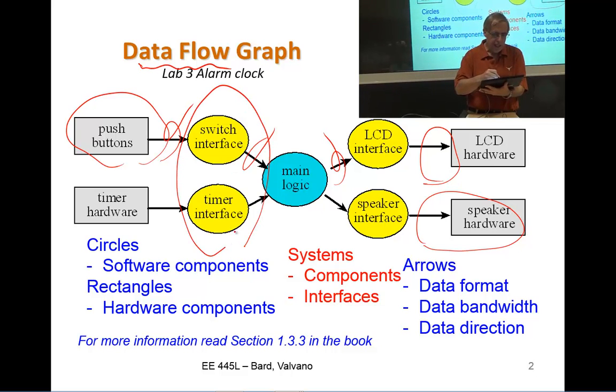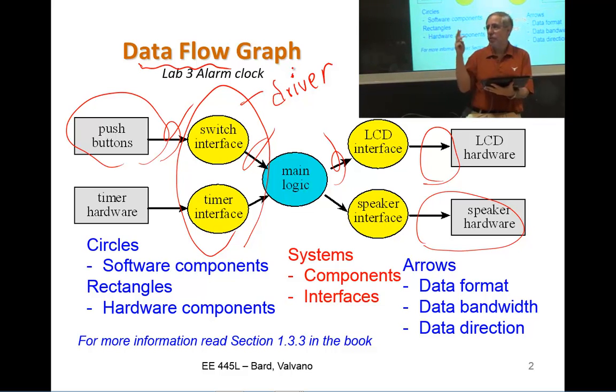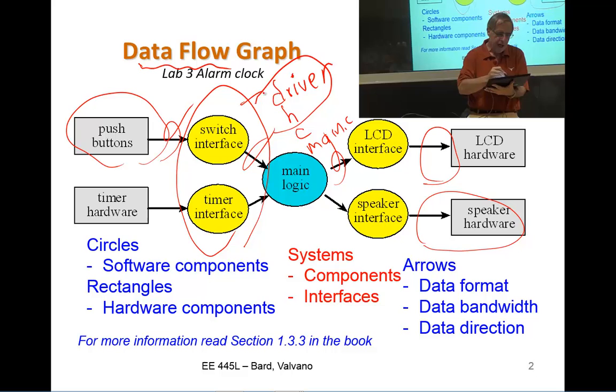The circles will be software. As we saw last time, we introduced this notion of a driver. A driver has how many files? Three files. There's the H file, which is the prototypes for the public function. The C file, which is the implementation of those functions, both private and public. And then there will be a main dot C, which we'll use for testing.